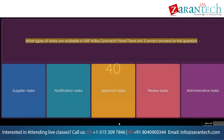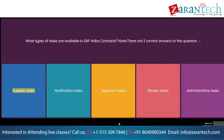Question: What types of tasks are available in SAP Ariba Contracts? Note: there are three correct answers. Option 1: Supplier tasks. Option 2: Notification tasks. Option 3: Approval tasks. Option 4: Review tasks. Option 5: Administrative tasks.